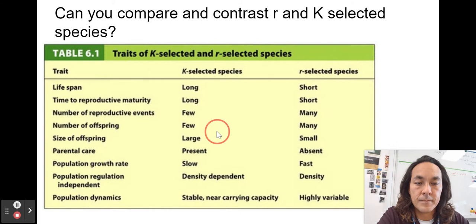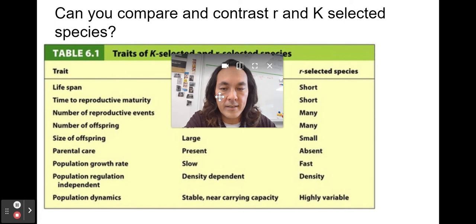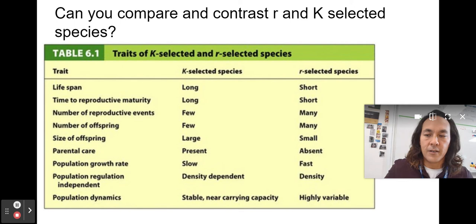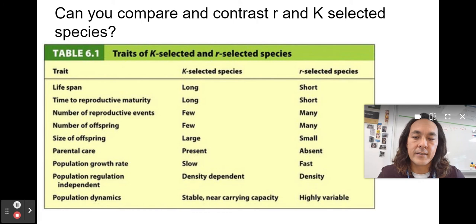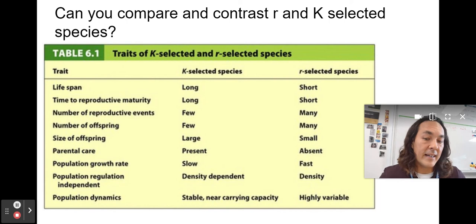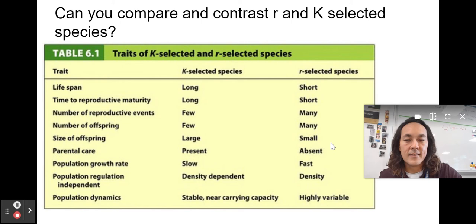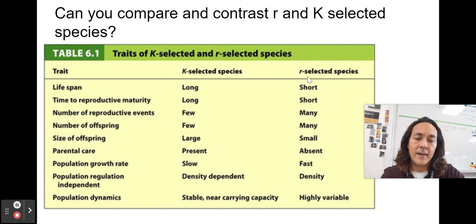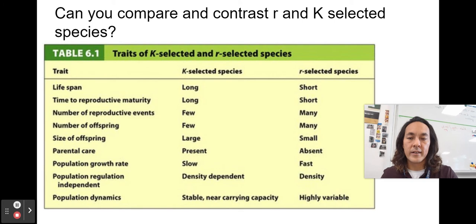Can you compare and contrast R-selected and K-selected species? K-selected species have a longer lifespan, take longer to reach reproductive maturity, and invest a lot of effort in their offspring — examples include humans and elephants. R-selected species have a short lifespan and may invest little effort in offspring — flies are a good example. Just because humans are K-selected doesn't mean we're better; bacteria and flies have been around far longer than us. It's a product of evolution and a way organisms work to reach carrying capacity.